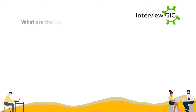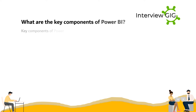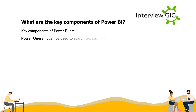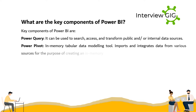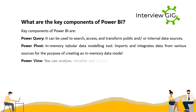What are the key components of Power BI? Key components include Power Query, which can be used to search, access, and transform public and/or internal data sources. Power Pivot is an in-memory tabular data modeling tool that imports and integrates data from various sources for the purpose of creating an in-memory data model.